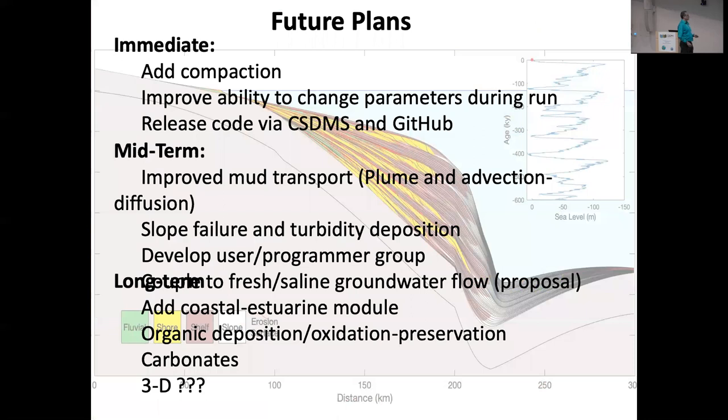So the future plans is now to go ahead and add compaction. I also want to make some improvements to the ability to change parameters during model run so you can start a model, change parameters around and continue the run. For instance, in my field area, I don't know if that uplift perhaps started partway through the time period I'm looking through, or if there's a river capture and sediment influx increases. I want the ability to be able to do that. And then I hope once we put in the last few extra things like this to release it via CSDMS and GitHub and make it publicly available.